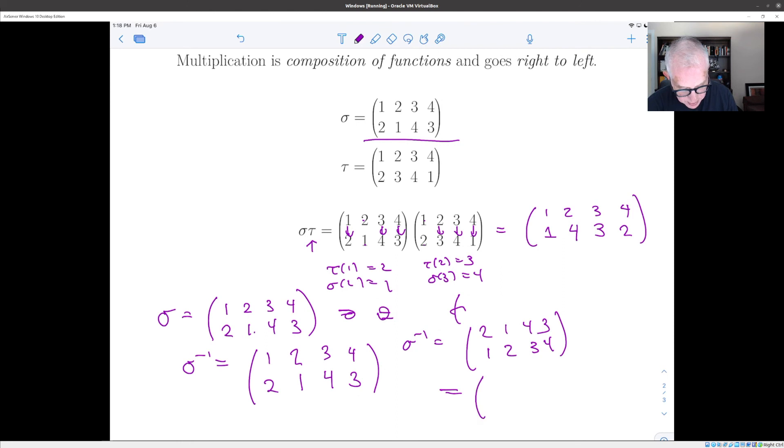So we take the one, two, two, one, three, four, four, three. And again, we find the inverse of an element. And then if you wanted to check, you could see that sigma times sigma inverse is the identity. One goes to two, goes to one. Two goes to one, goes to two. Three goes to four, goes to three. Four goes to three, goes to four. So the product is actually the identity.